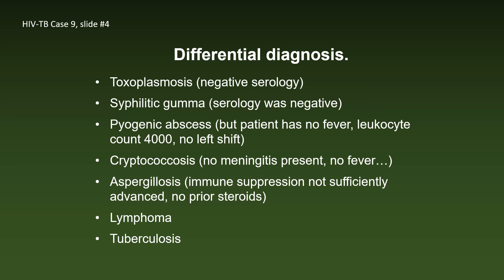Such a finding opens up quite a large differential diagnosis. Toxoplasmosis and syphilis are unlikely because the serologies were negative. A pyogenic abscess would likely cause fever and neutrophilia with left shift. Against cryptococcosis is the absence of fever and meningitis. Aspergillosis — the immunosuppression is not sufficiently advanced and he had not received prior steroids. Lymphoma is a possibility, although it usually occurs in patients with less than 50 CD4 cells. And finally, tuberculosis.